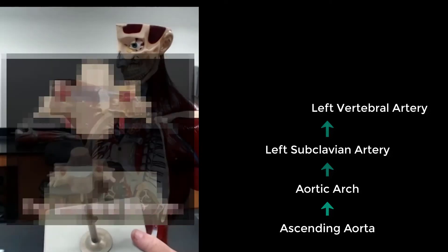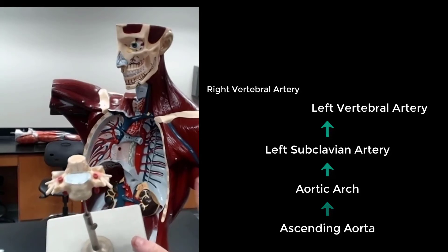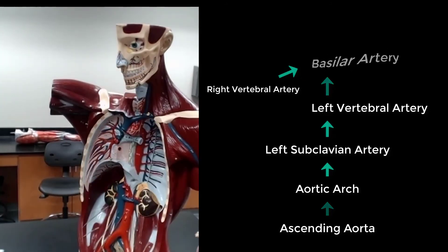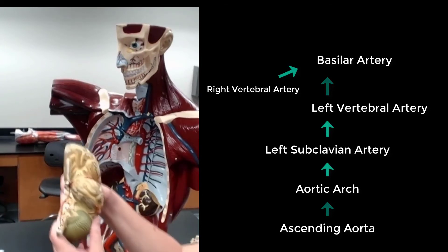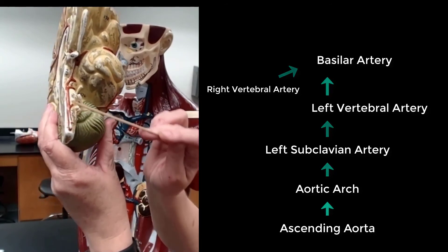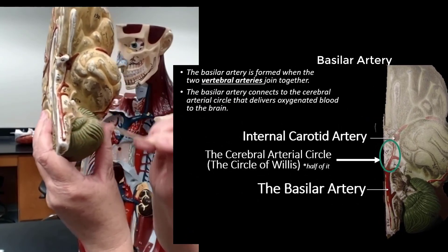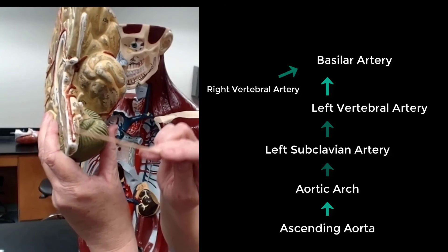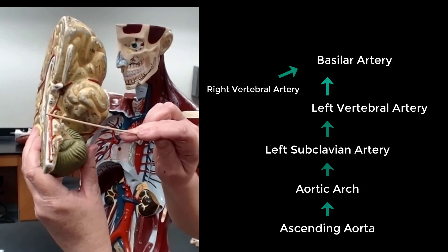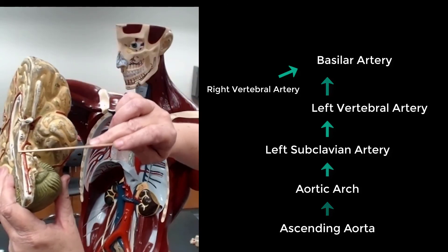It travels through the base of the skull at the foramen magnum, where the two vertebral arteries join together to form the basilar artery at the base of the brain, or the brainstem. The basilar artery runs along the brainstem and feeds into the Circle of Willis.